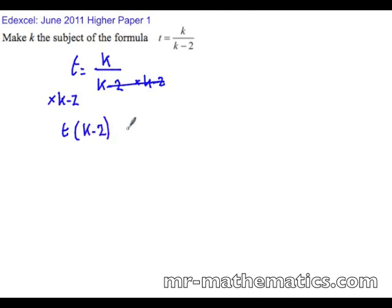So you have t lots of k minus 2 equals k, and you can expand these brackets to make tk minus 2t equals k.